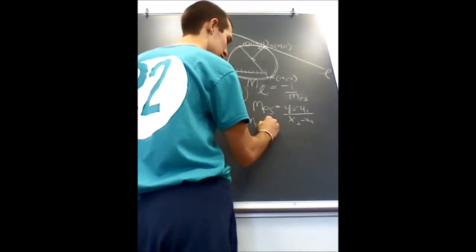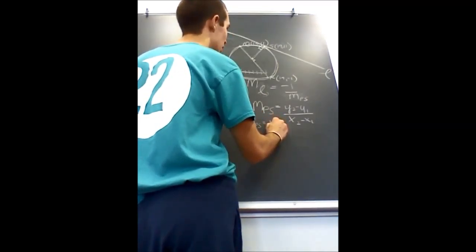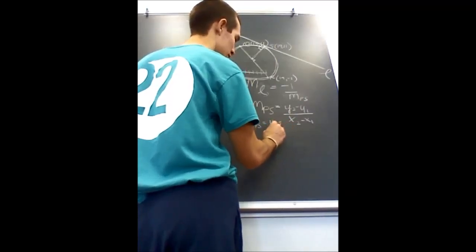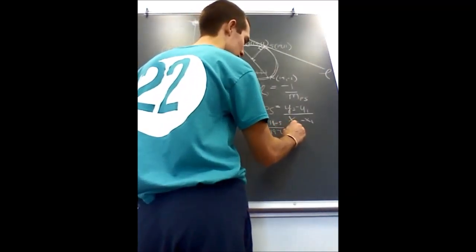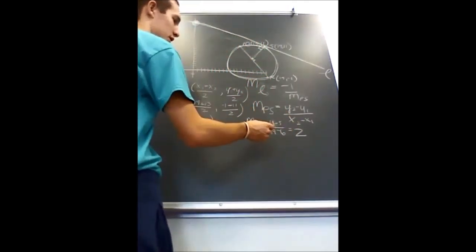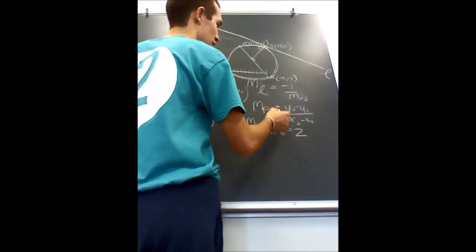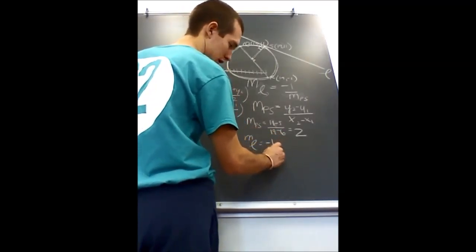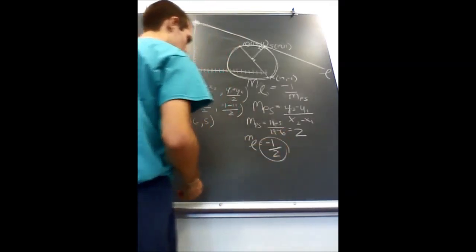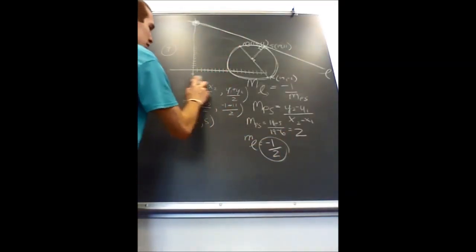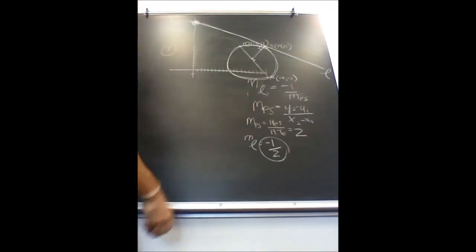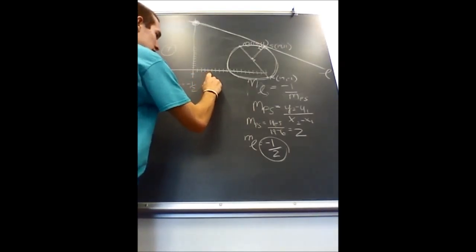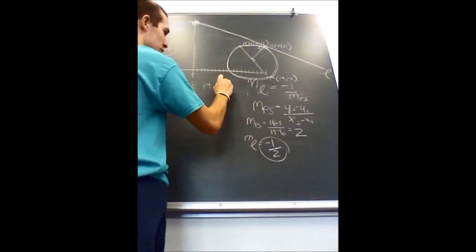That means the slope of line L would be equal to negative 1/2. So if we have the slope of a line and we have a point on the line, which we do—point S at (19, 11)—